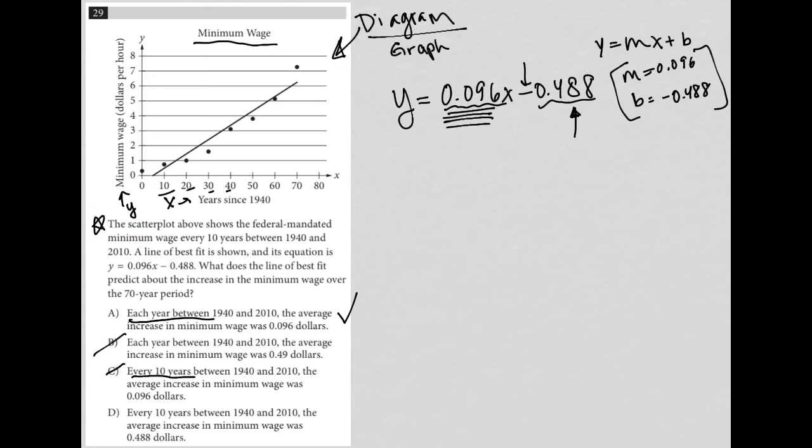And then answer choice D, every 10 years between 1940 and 2010, the average increase. We're back to this 0.488. So no, that's gone.